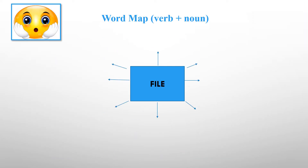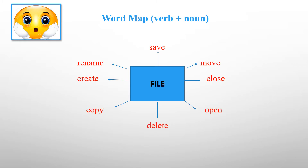Look at this word map. It shows different verbs that can be used with the word file. For example, you can say, save a file, or you can say, rename a file. Complete the other combinations of the verbs you see on this slide and the word file. Look up the translation of these verbs if you don't know them.